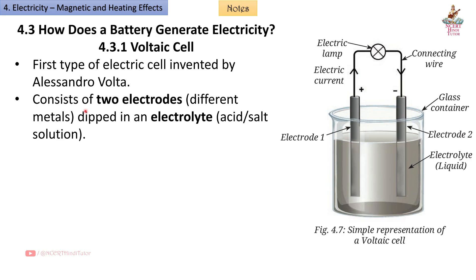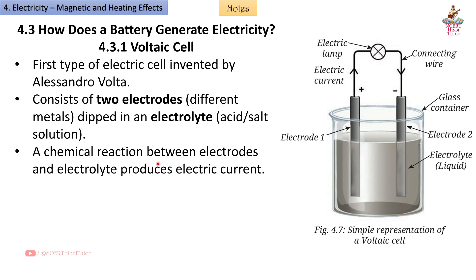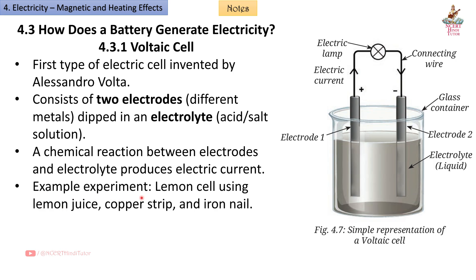4.3 How does a battery generate electricity? 4.3.1 Voltaic Cell: The first type of electric cell, invented by Alessandro Volta. It consists of two electrodes (different metals) dipped in an electrolyte (acid or salt solution). A chemical reaction between the electrodes and electrolyte produces electric current. Here we can see the electrodes, electrolyte, connecting wire, and electric lamp — current flows from the positive to the negative terminal. Example experiment: a lemon cell using lemon juice, a copper strip, and an iron nail.